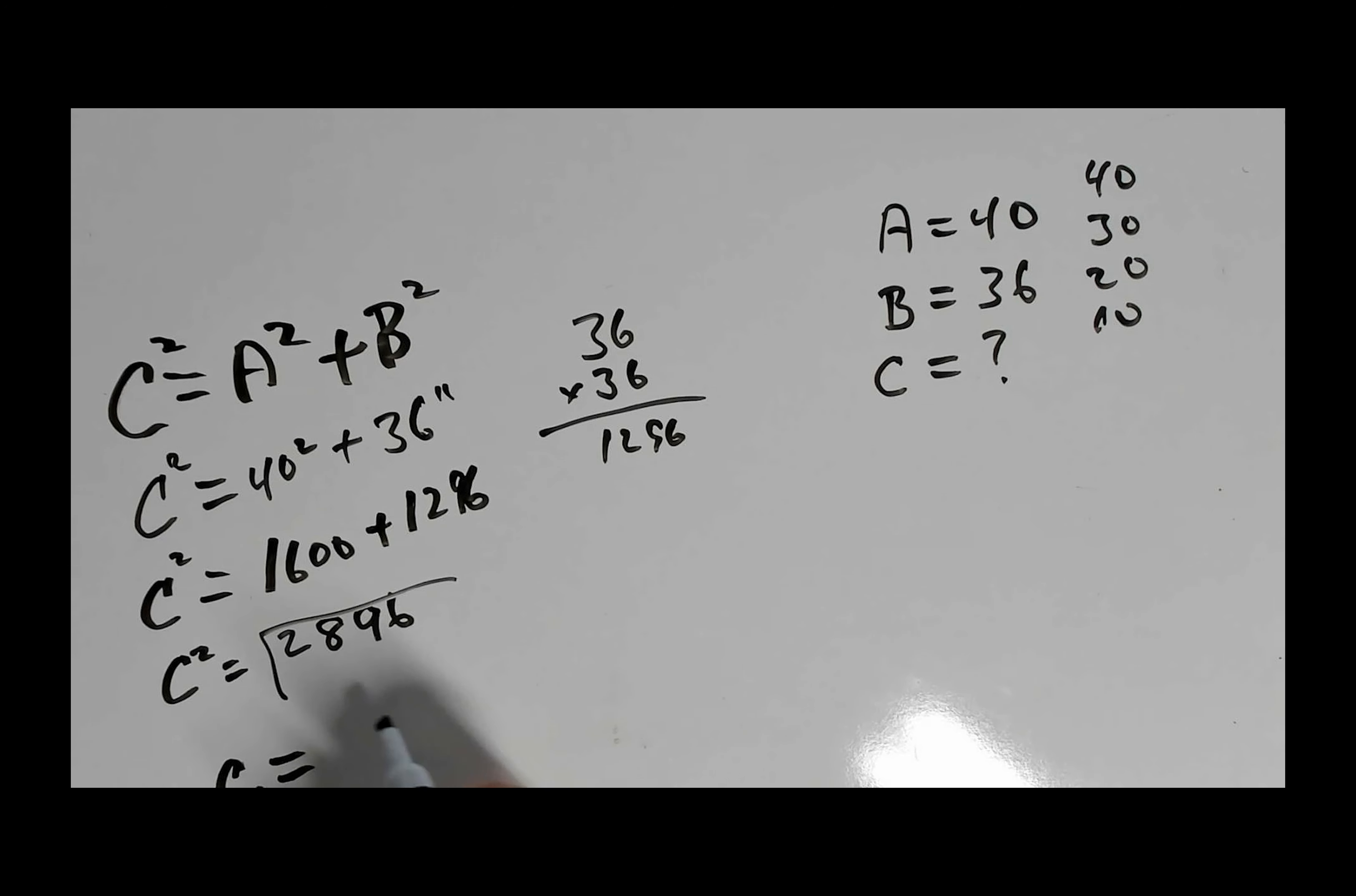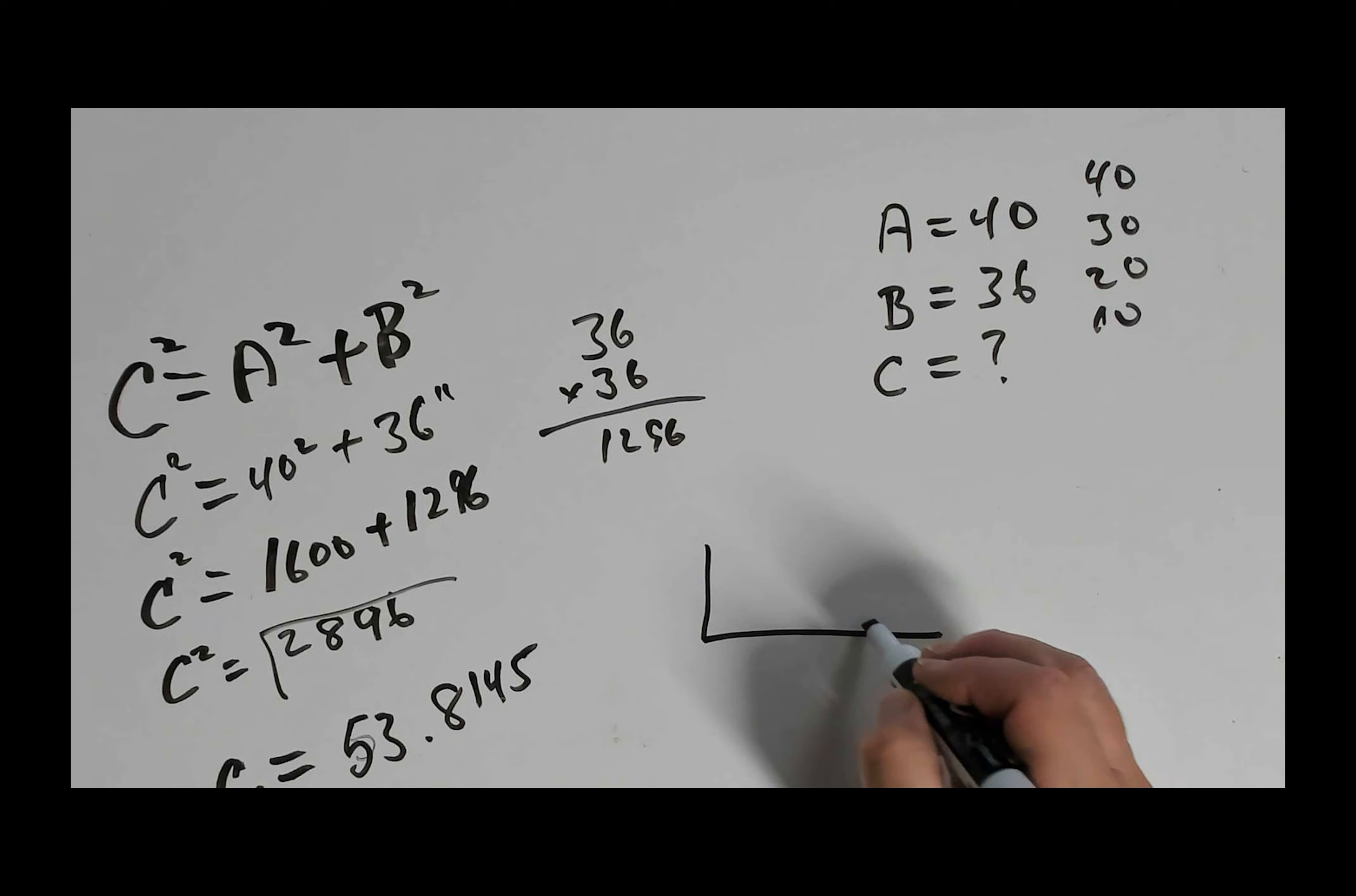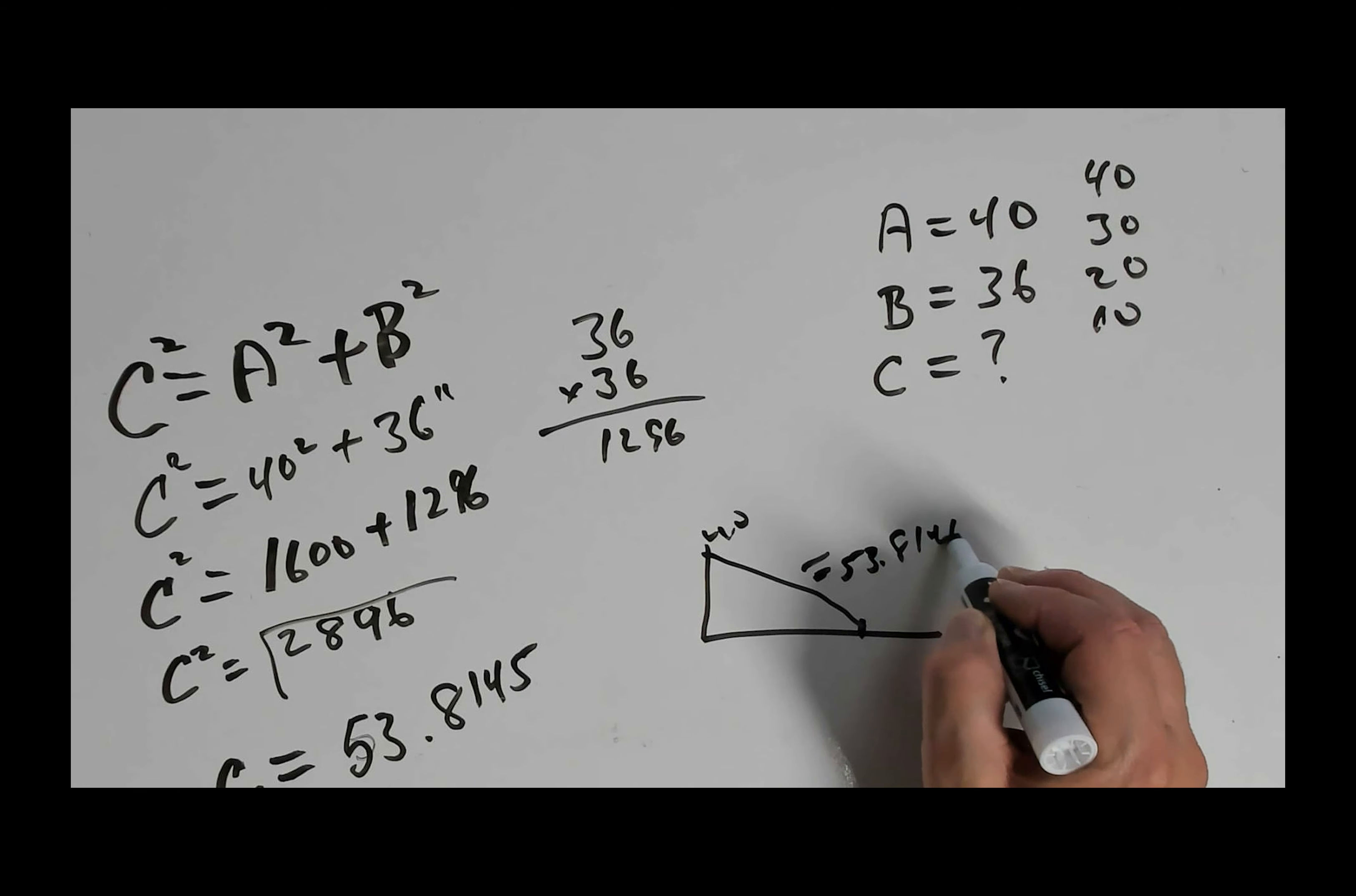And our square root of that particular number comes to 53.8145, rounding it up. So your guy wire for the 40 foot to the antenna mast is going to have to be about 53.8145.